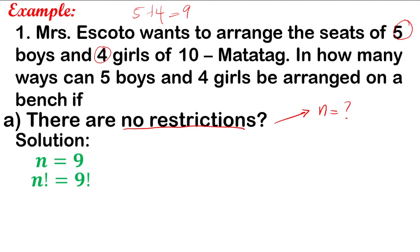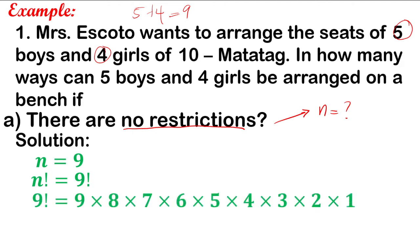Now evaluate 9 factorial. That means you have to multiply 9 × 8 × 7 × 6 × 5 × 4 × 3 × 2 × 1. Computing that, 9 factorial is equivalent to 362,880. Therefore, there are 362,880 ways for Mrs. Escoto to arrange the seats of 5 boys and 4 girls of 10 Matatag, provided there are no restrictions.